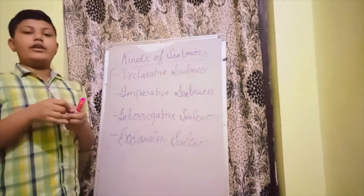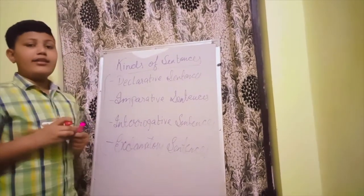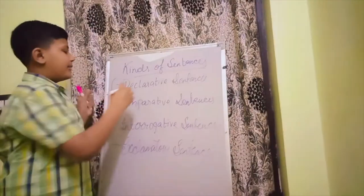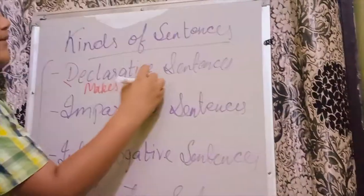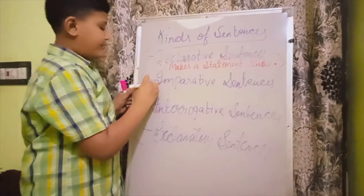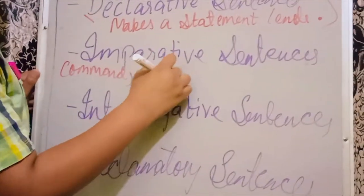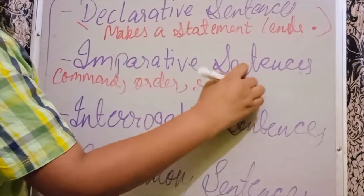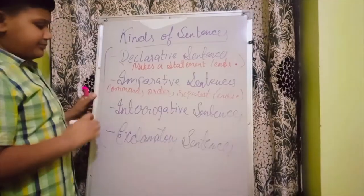Now I am going to explain what these sentences are. So declarative sentences make a statement and end with a full stop or period. An imperative sentence makes a command, order, or request and ends with a full stop or period.